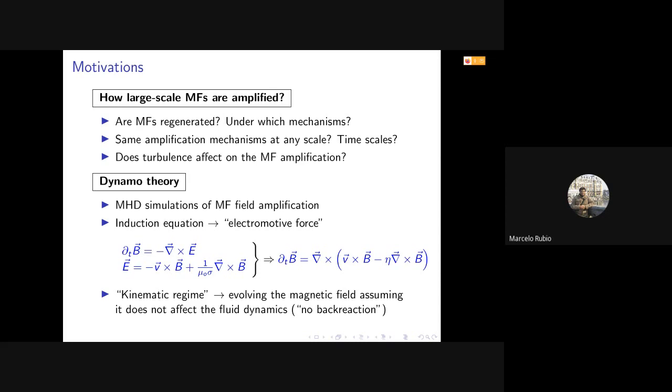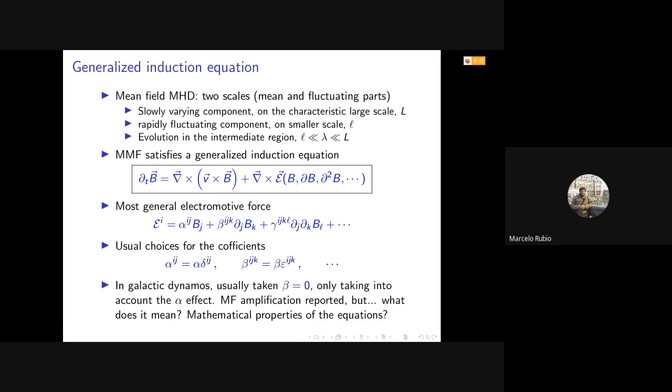So during the last years, there have been some generalizations of this equation in order to see some new models that can be taken into account to explain the amplification of magnetic fields. In particular, there is mean field MHD in which two different scales are present: one is a slowly varying component on some large characteristic scale, and the second scale is a faster fluctuating component on some smaller scale. We are interested to evolve the magnetic fields using this generalized induction equation in an intermediate region.